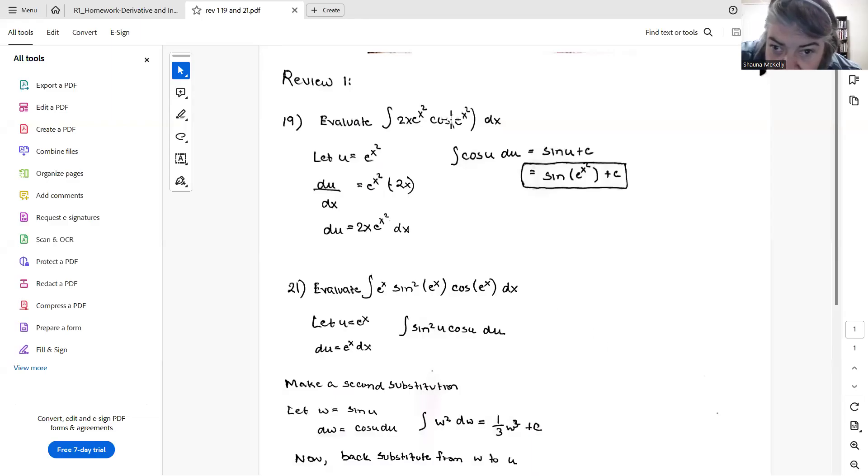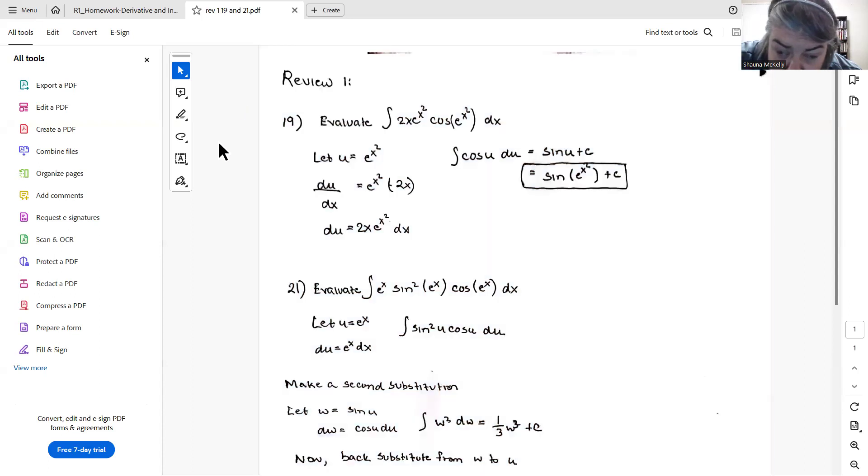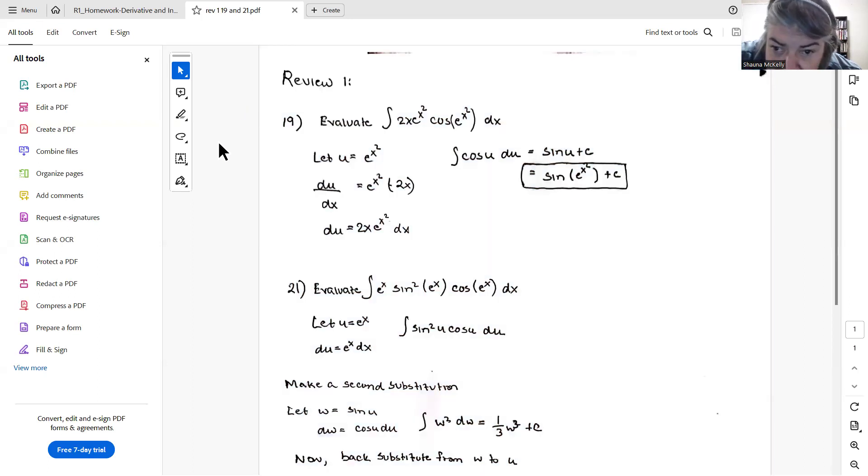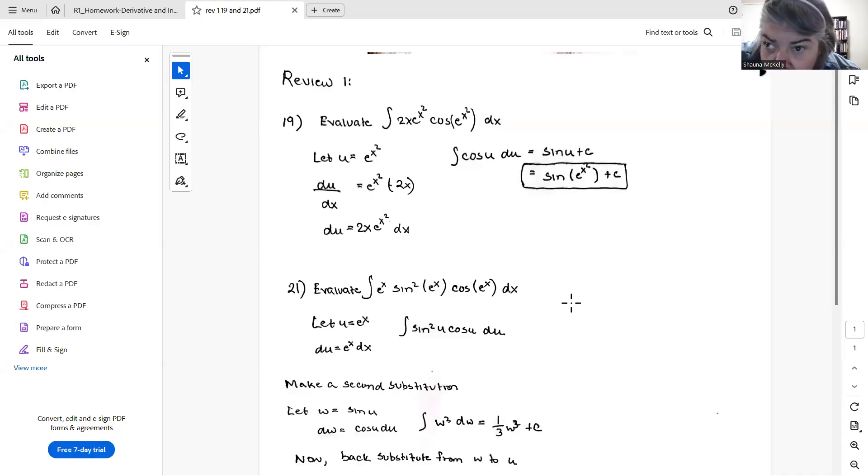This is from your review one. The first one is number 19, and it says evaluate the integral. It's indefinite, so we don't have a numerical answer for this because it is an indefinite integral. But nevertheless, the problem that some of you had with this first integral was the u-substitution itself.